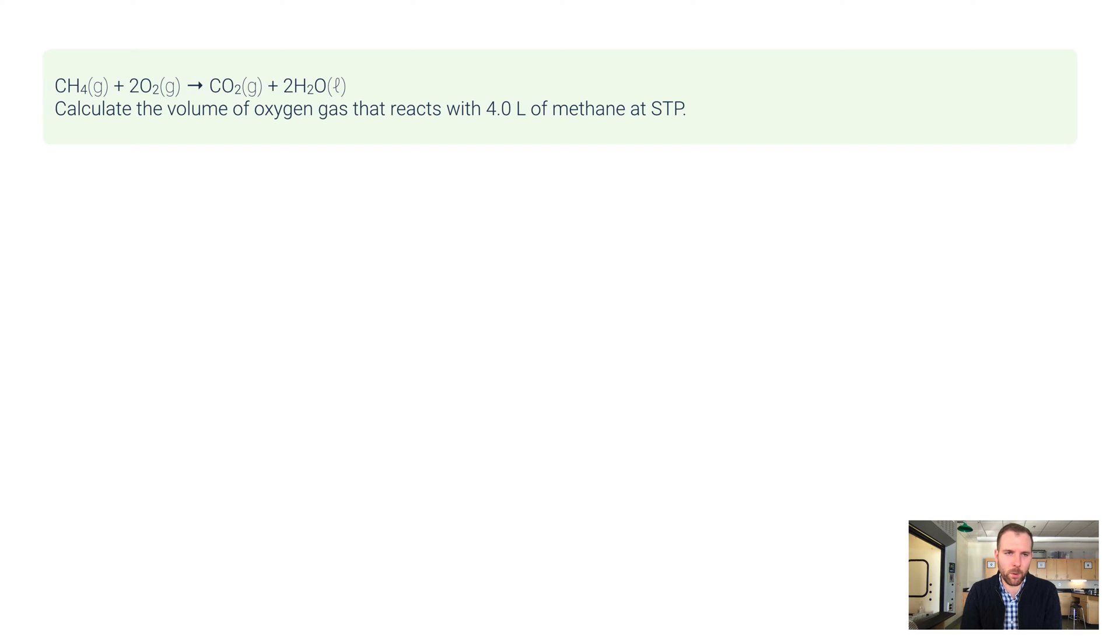Let's take a look at an example problem. This gives us an equation: the combustion of methane and oxygen producing carbon dioxide and water. It says calculate the volume of oxygen gas that reacts with 4.0 liters of methane. This is methane, so we're putting in 4.0 liters and we want to calculate what volume of oxygen should we have.